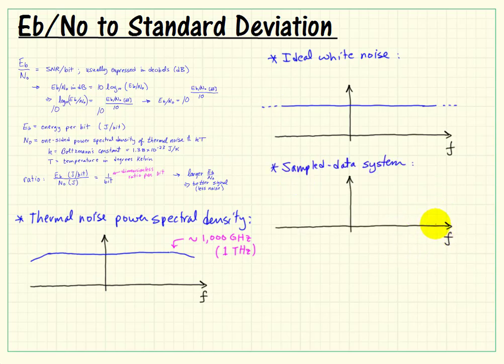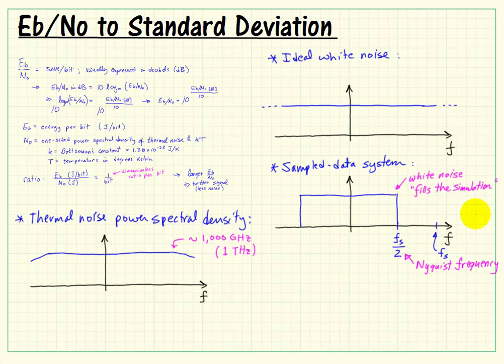Now, a sampled data system with sampling frequency f sub s has valid frequencies out to the Nyquist frequency of f sub s over 2. Therefore, our noise that fills this entire simulation spectrum would be uniform from minus f sub s over 2 to positive f sub s over 2.